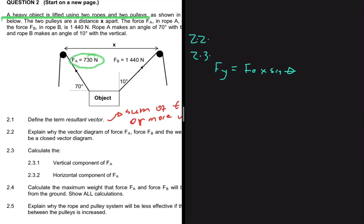Substituting the values, we have FY equals 730 multiplied by sine of 70 degrees. Putting that in the calculator gives 685.98 newtons. That is the vertical component of FA.